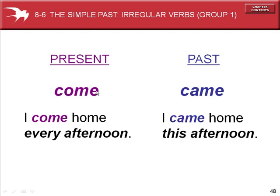Come, in the present tense, has an irregular past tense: came. I come home every afternoon. I came home this afternoon. Come is an irregular verb.